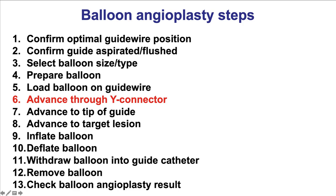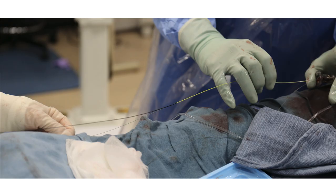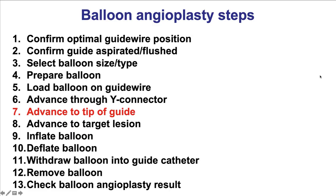Step number six is to advance through the Y connector. This is typically done with the assistant holding the back end of the wire, and then the operator pushing the introducer and inserting the balloon through the Tuohy.